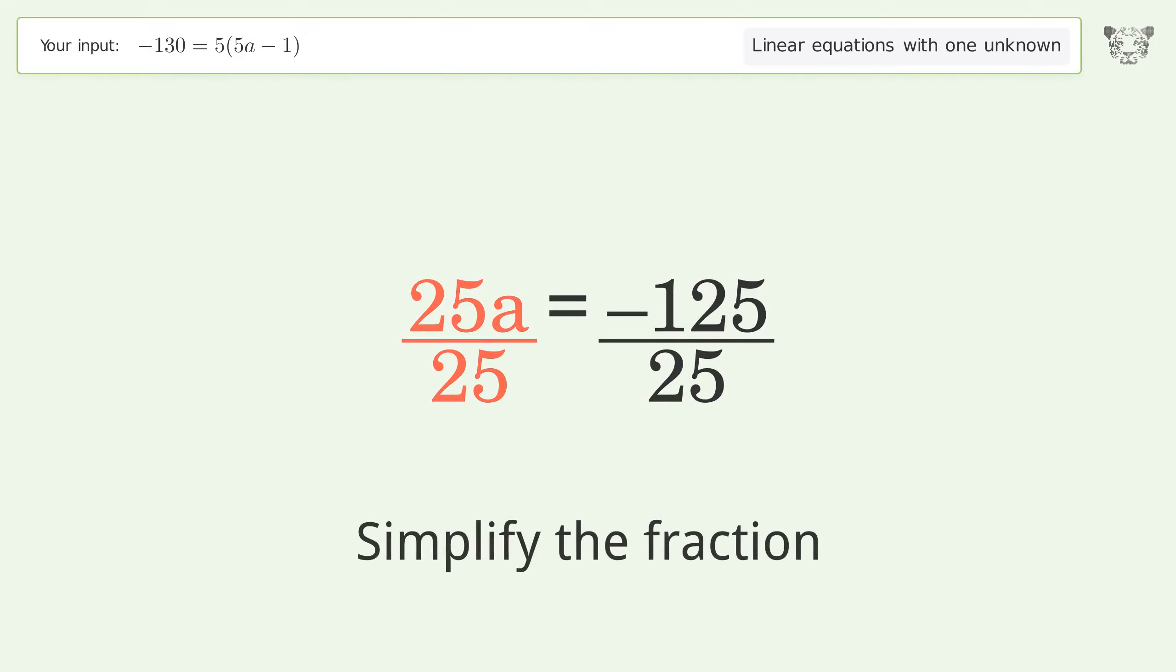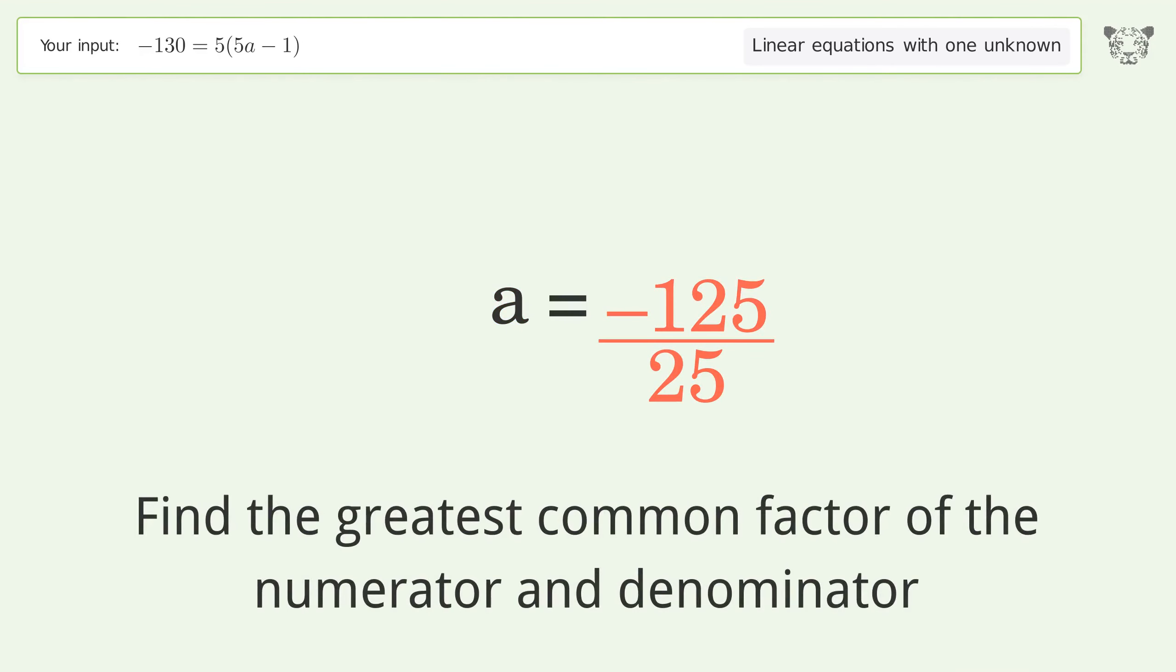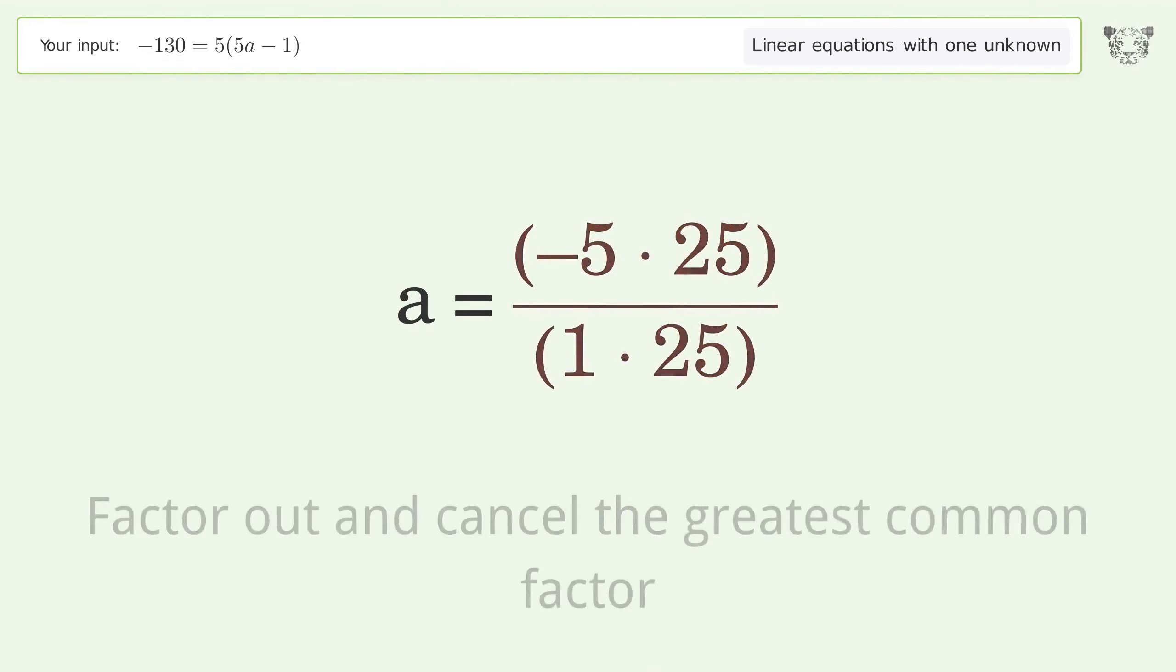Simplify the fraction. Find the greatest common factor of the numerator and denominator. Factor out and cancel the greatest common factor.